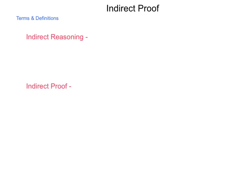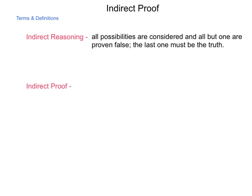So let's begin with indirect reasoning. This is when all possibilities are considered and all but one are proven false, this one that remains must be the truth.